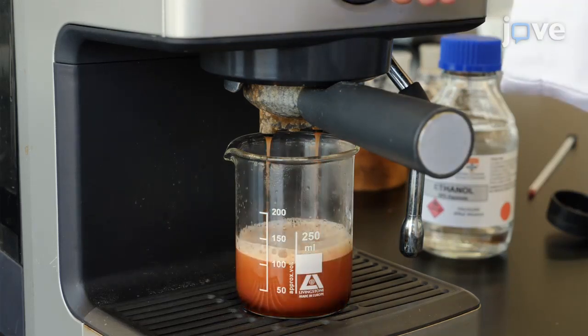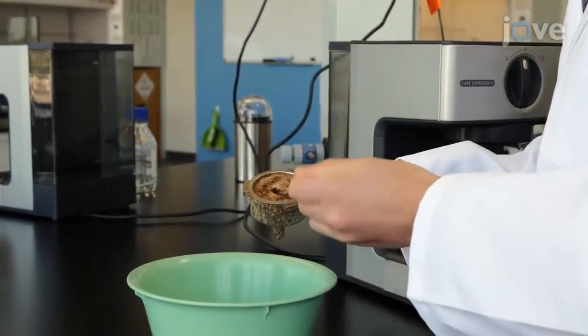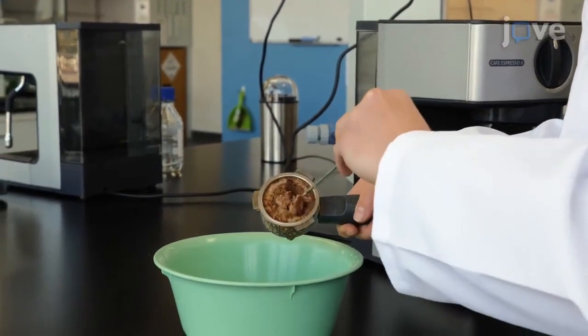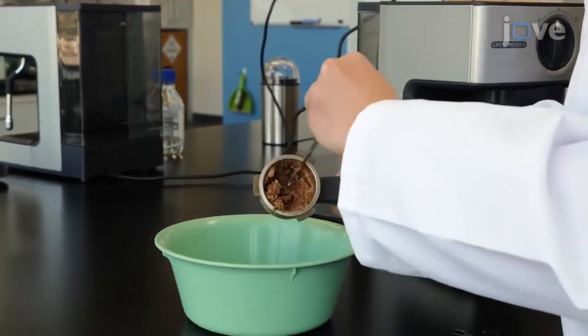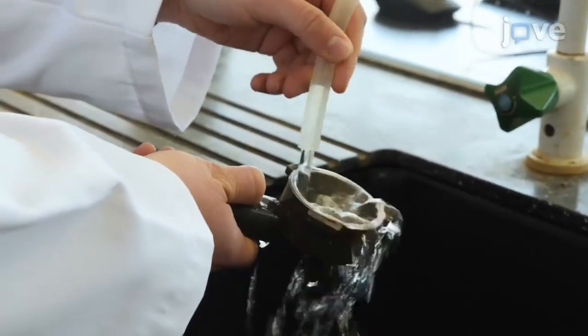Let the portafilter finish dripping, and then remove it from the espresso machine. Use a spatula to remove the clove grinds from the portafilter and discard them into a solid waste container. Rinse out any residual solids with tap water in the sink.